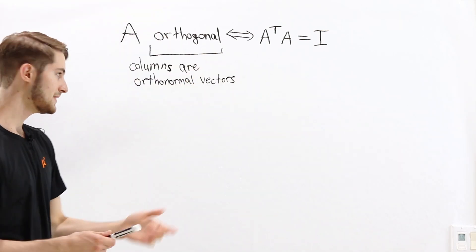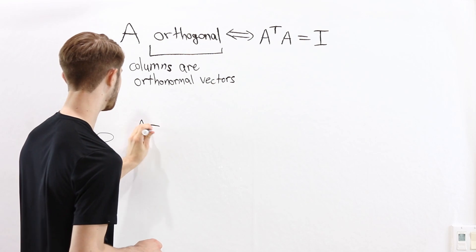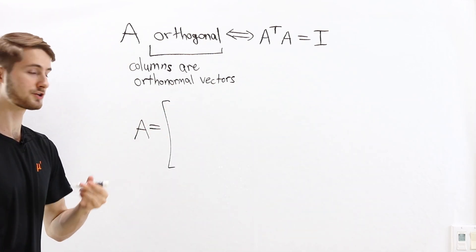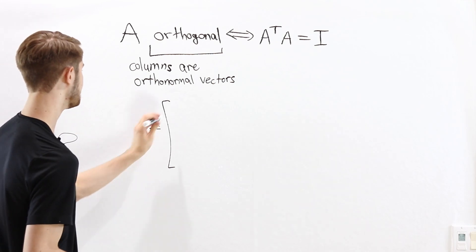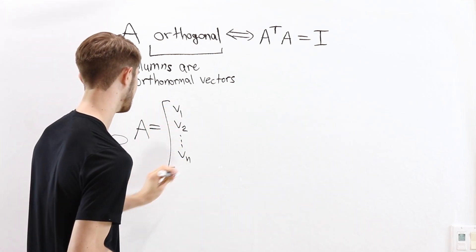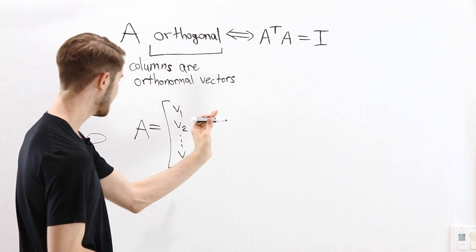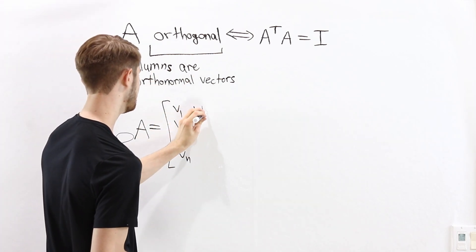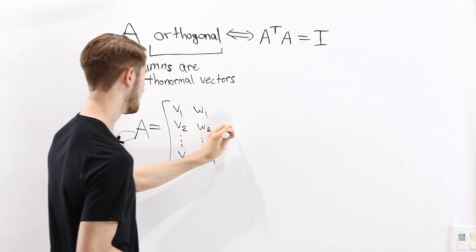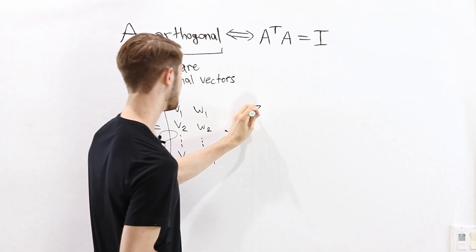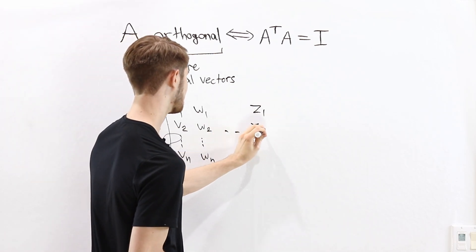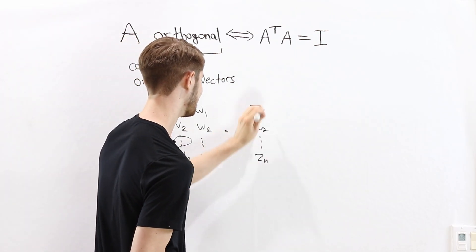Anytime we have a matrix, we can think about the columns as vectors. So the first column is the vector v with coordinates v1, v2, and so on to vn. The second column is the vector w with coordinates w1, w2, all the way to wn. We continue to the last vector, which we call z, with entries z1 through zn.